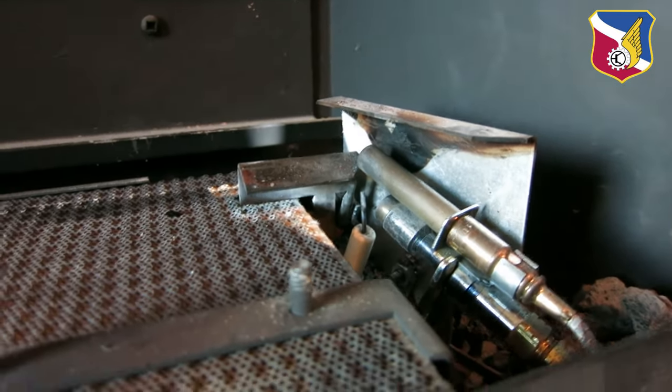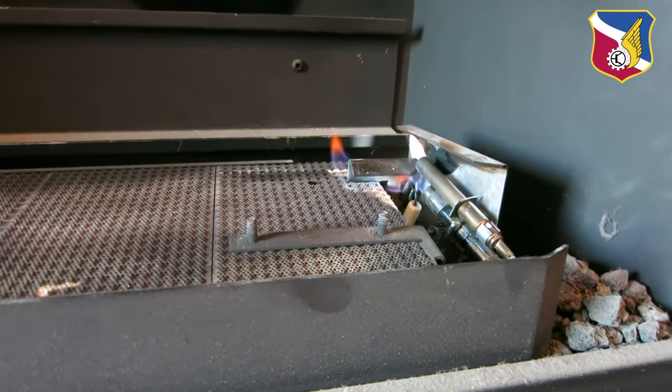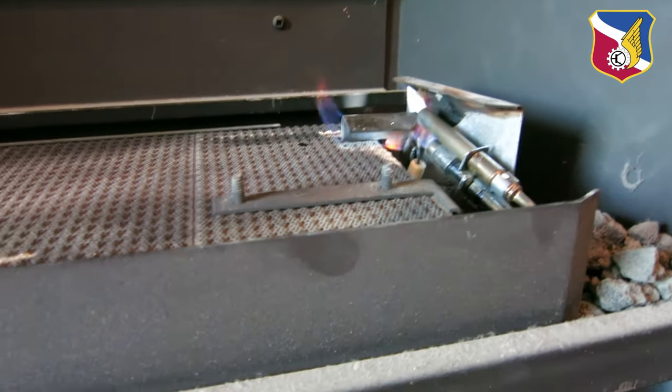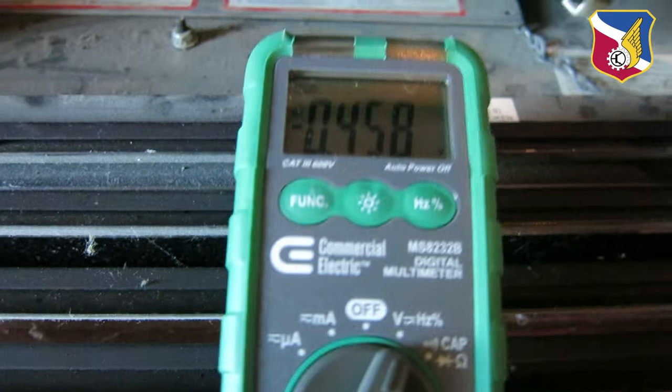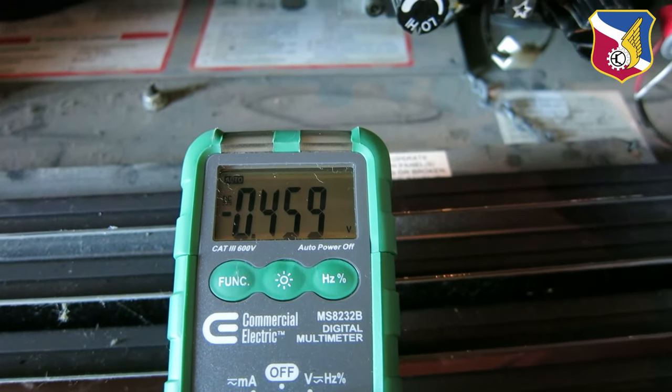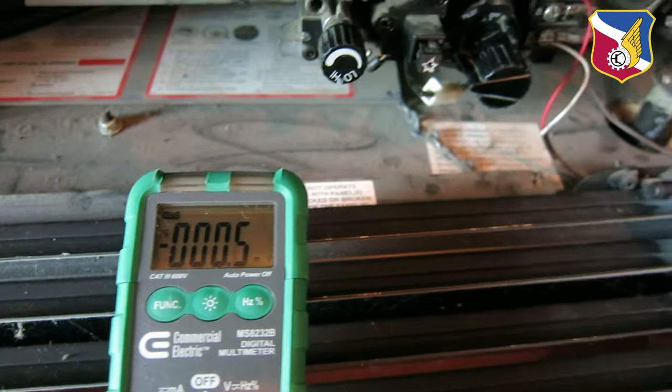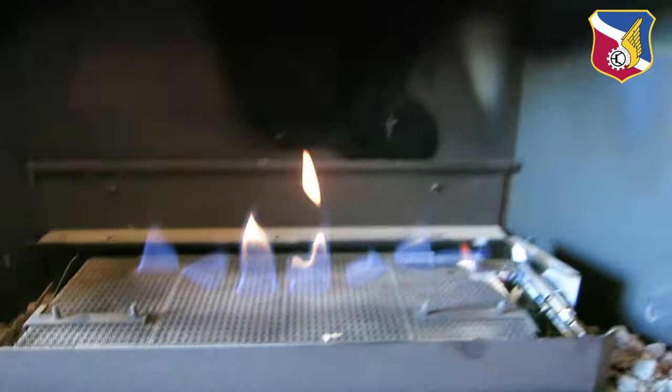So after it's clean, let's now turn it on, turn on the pilot and retest the millivolt level. So right now after cleaning it, it looks like the fire is burning a lot cleaner too. And as you can see I'm measuring the millivolt level. As you can see right now it went up to 458, which is a huge improvement than before.